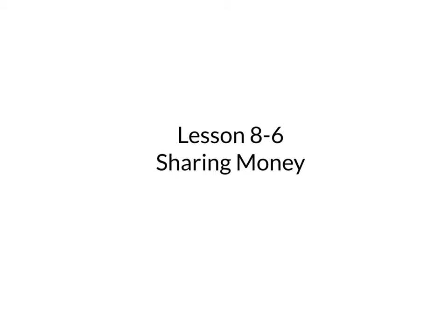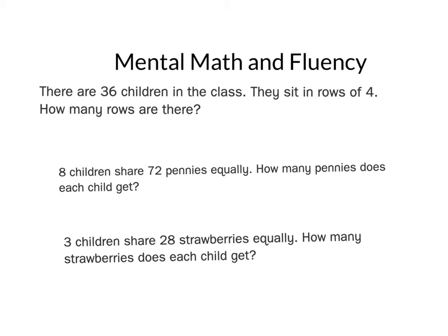Let's get started with three problems that are number stories for you to solve. Let's look at the first one. There are 36 children in the class. They sit in rows of four. How many rows are there? So we're starting with 36 children. We're dividing them into rows of four. So 36 divided by four or what number times four equals 36? Your answer should be nine rows.